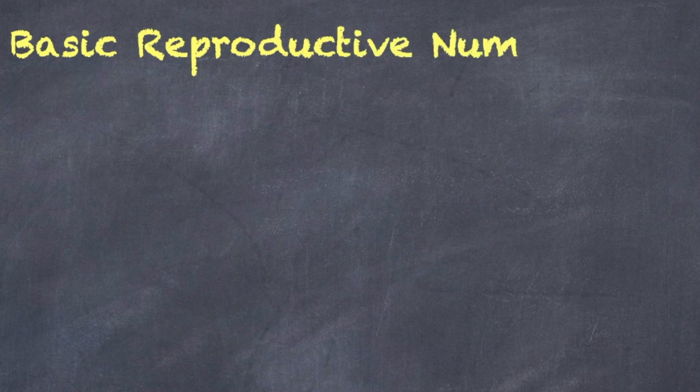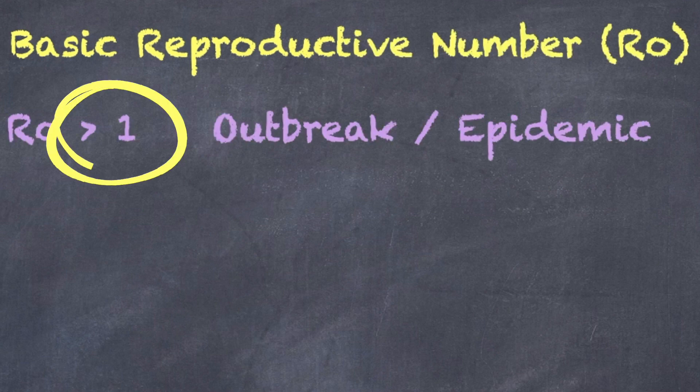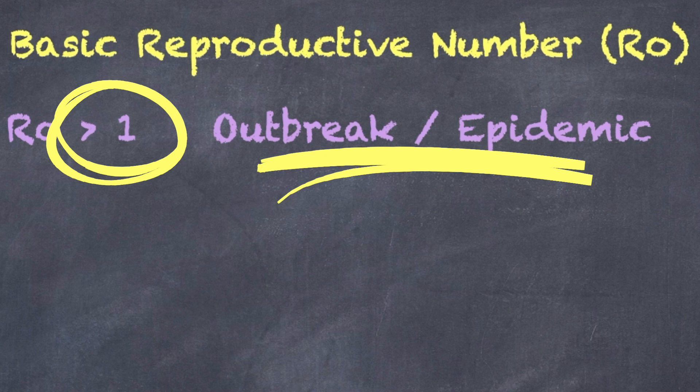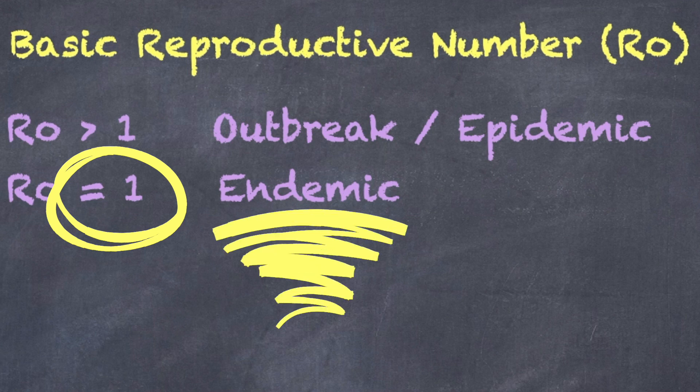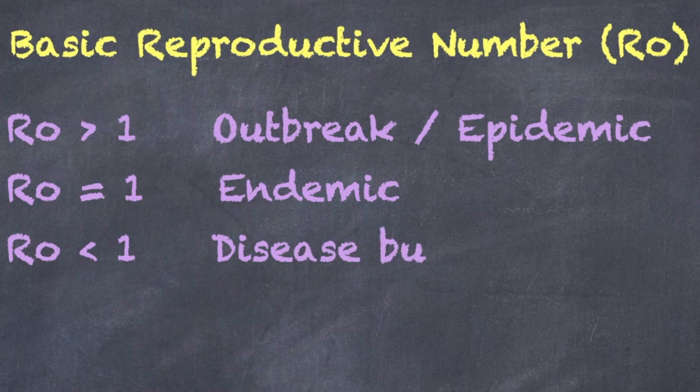In this case, the R0 is eight. If R0 is greater than one, that means that each case will infect more than one person, then the disease will spread and we'll have an outbreak or an epidemic. If R0 is exactly one, then each person will infect exactly one other person and the disease will just simmer in the community and we'll have what we call an endemic disease. And of course, if it's less than one, then the disease will quickly burn out.